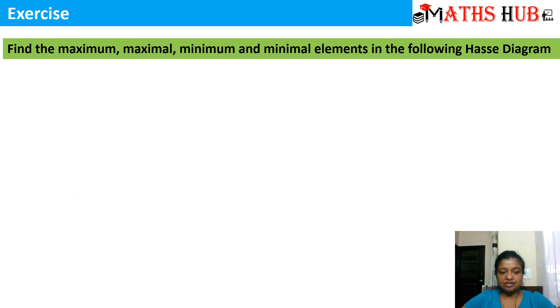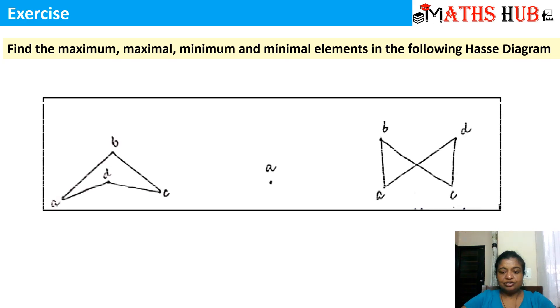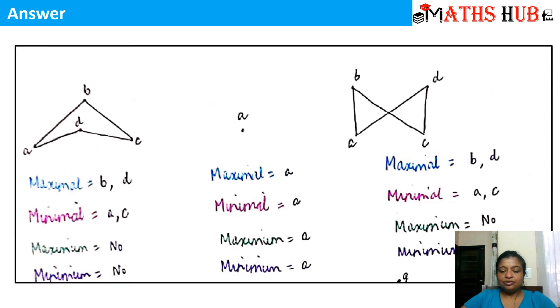Let's see some other exercises. I have given you some Hasse diagrams, and you need to find out which are the maximum, maximal, minimum and minimal elements. I think by now you are clear with these definitions and can easily calculate these. The answers are also given in the slides — you can check them after you have attempted them. And similarly, there is a next exercise for you all where you can find the maximum, maximal, minimum and minimal elements. The answers are given there too. If you have any query regarding any exercise, you can always put a comment in the comment section and I will reply to it.